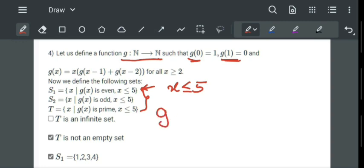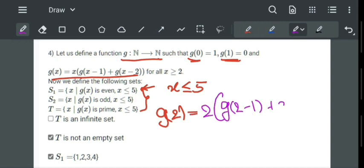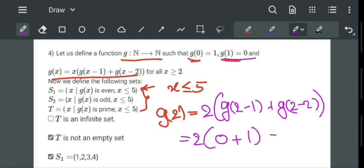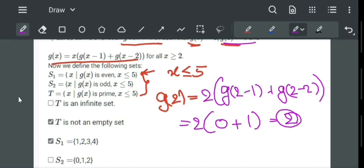So first we will find g of 2. By this general formula, g of 2 will be 2 times g of 2 minus 1 plus g of 2 minus 2. Which is equal to 2 times g of 1 which value is 0, plus g of 0 which value is 1. It implies that g of 2 is equal to 2.